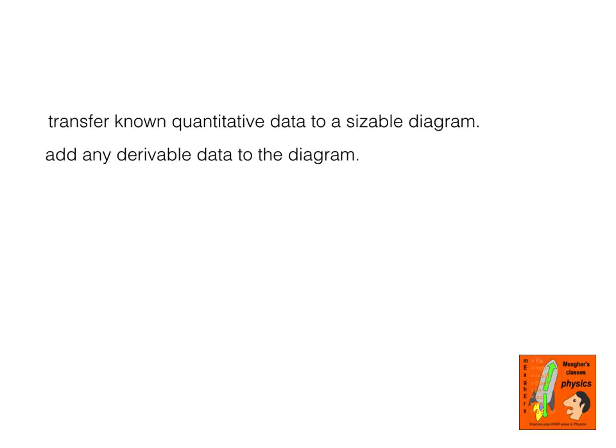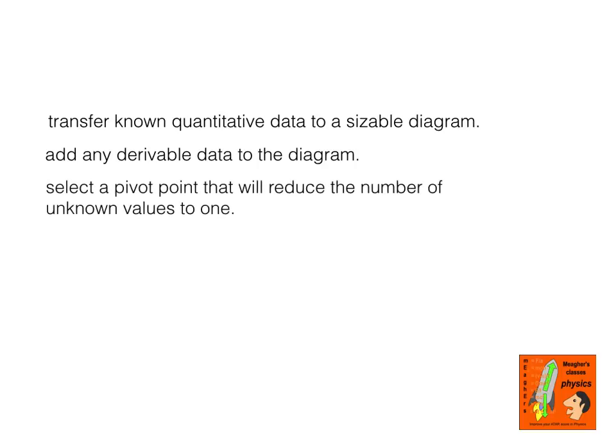That derivable data might be dimensions of length, additional forces, or even the moments you can add. You should select a pivot point before you do any moment additions, and the pivot point should be selected when you look at each individual question. Usually the pivot point is selected so that one of the unknown forces is acting through it, meaning you don't have to include the moment from that force — this reduces the number of unknowns in your situation.